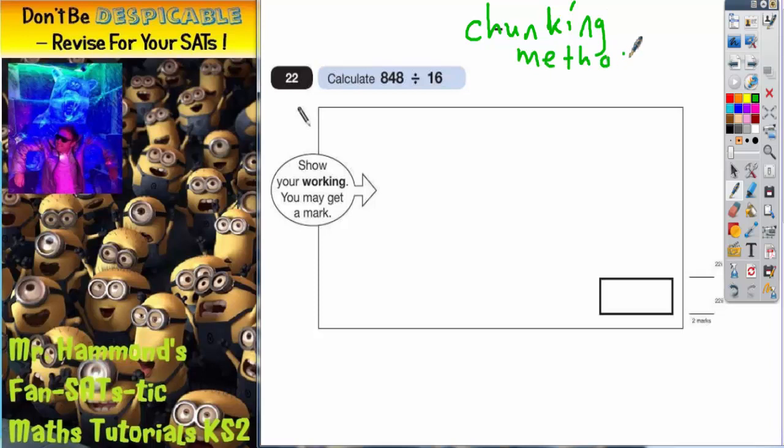And the chunking method is all about repeated subtraction. So we're going to subtract chunks of 16 from 848 until we've got nothing left, and then we're going to add up our chunks. So before we start doing that, let's just set it up so it's going to be 16 into 848.